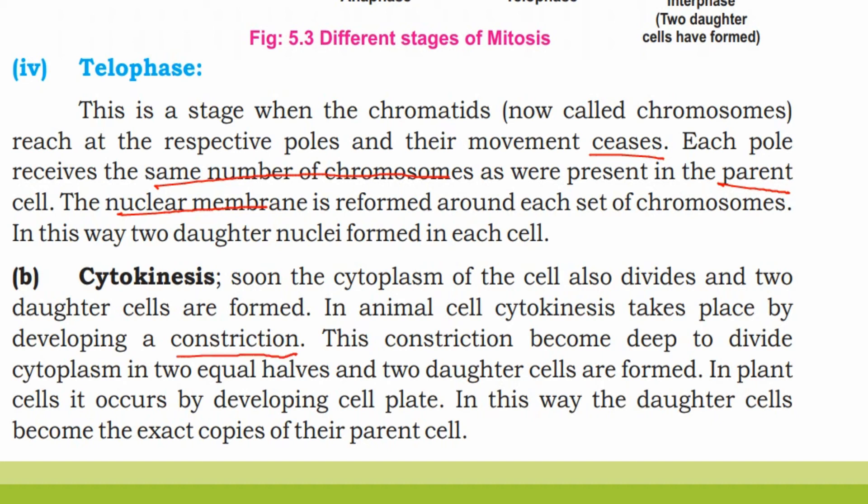This constriction becomes deep to divide the cytoplasm into equal halves, and two daughter cells are formed.